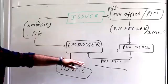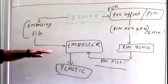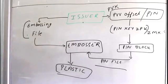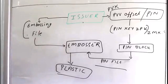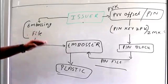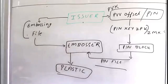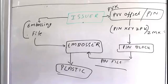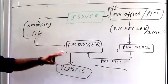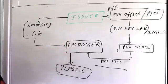The issuing bank will run the cycle of PIN file generation. First, they have to generate the PIN for the customer — the PIN is what you enter at the ATM or POS machine. Since it is your personal data, the issuing bank must ensure it is securely transferred. To generate the plastic, they have to provide embossing information and the PIN file to the embosser. The embosser is the one who creates the plastic using the information given by the issuing bank in the form of files.